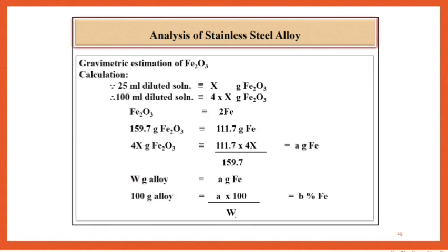Calculations: 25 ml diluted solution contains x gram Fe2O3. Therefore, 100 ml diluted solution contains 4x gram Fe2O3. Fe2O3 corresponds to 2Fe. 159.7 gram Fe2O3 corresponds to 111.7 gram Fe. So 4x gram Fe2O3 corresponds to (111.7 × 4x) / 159.7 gram Fe, which equals A gram Fe. Therefore, 100 gram alloy corresponds to (A × 100) / W, that is B% of Fe.